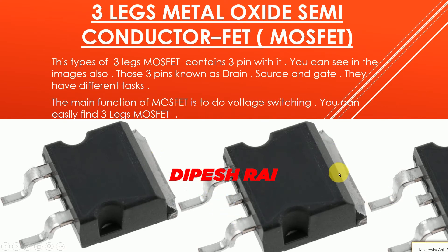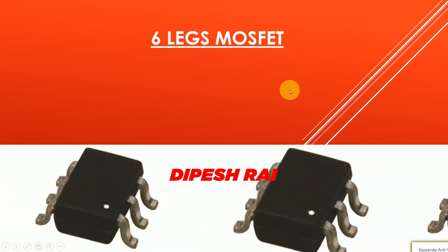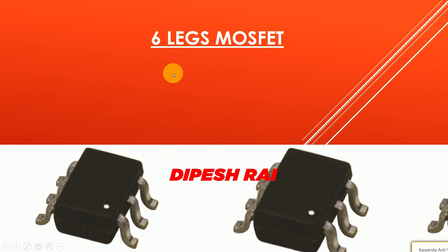Now we are going to discuss the 6-leg MOSFET. As you can see in the image, there are six legs — three on each side. This type of MOSFET is known as the 6-leg MOSFET. It can be found in many smartphones and is commonly found in the charging path of the phone.